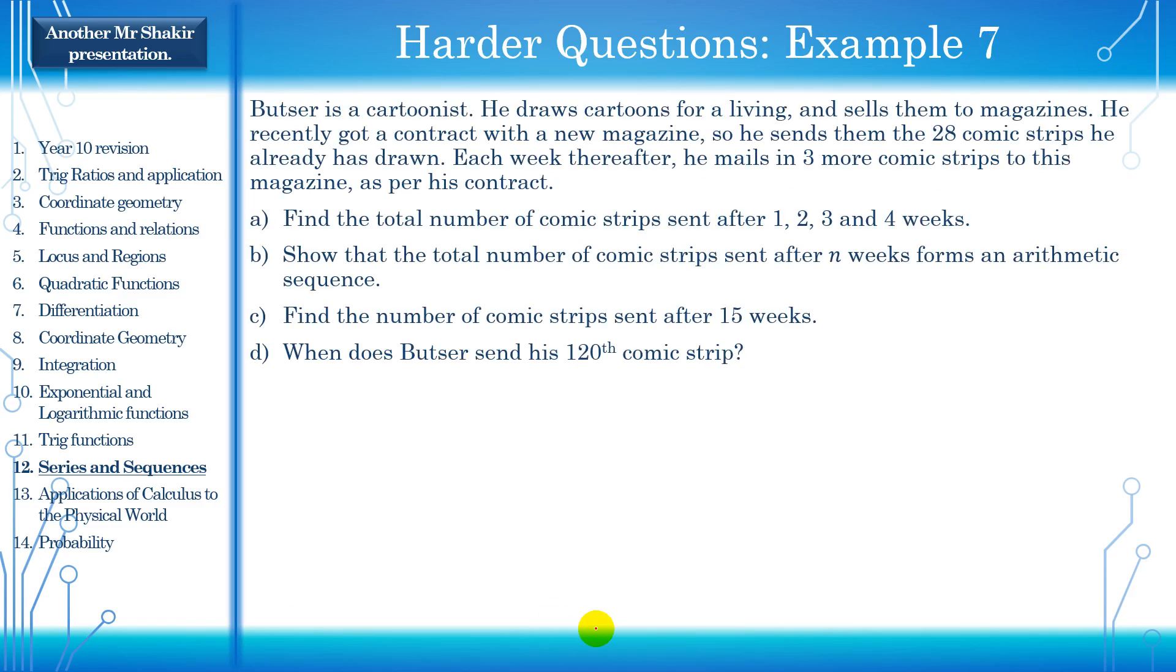Let's move on to the next one. This is the last one for today. Butser is a cartoonist. I wonder where I got that name from. He draws cartoons for a living and sells them to magazines. He's recently got a contract with a new magazine. So he sends them the 28 comic strips he already has drawn. So he's already got 28 comic strips. But he can only make three comic strips a week. So each week thereafter, he mails in three more comic strips to the magazine as per his contract. So he's already got 28. So he'll start off by sending 28. And then each week thereafter, he's going to mail in three more. He can only draw three a week. Find the total number of comic strips sent after the first, second, third and fourth weeks.